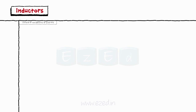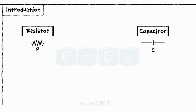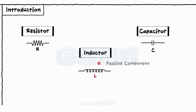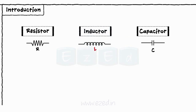Let's start with the introduction. Similar to a resistor or a capacitor, an inductor is also a passive component. When a metal wire is wound in a circular manner, we get an inductor. The symbol of an inductor is as shown. It is represented by a capital L, and its unit is Henry.